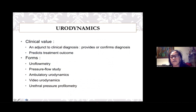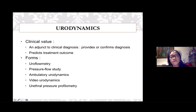Urodynamics is a study of the hydrodynamics of the lower urinary tract, and in female urology it is used as an adjunct to provide or confirm a diagnosis. In some cases it has been used to predict treatment outcomes, such as predicting success of surgical treatment or the probability of adverse outcomes after a proposed treatment.